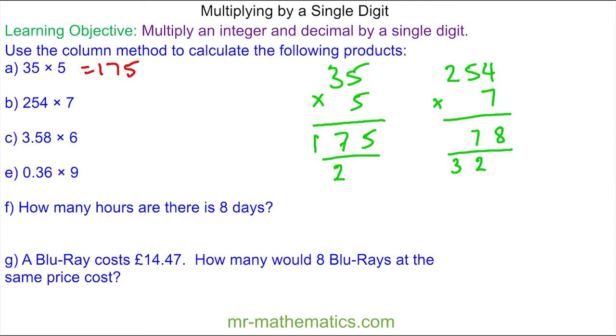And finally 2 times 7 which is 14. Add the 3 which is 17. So we have 7 hundreds and 1 thousand. So 1,778.